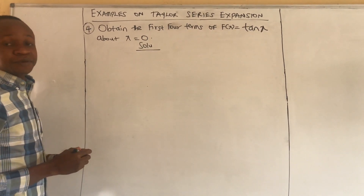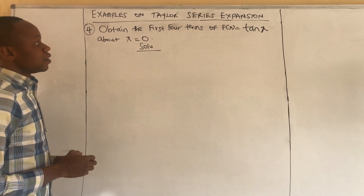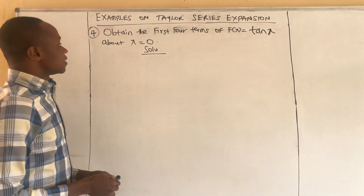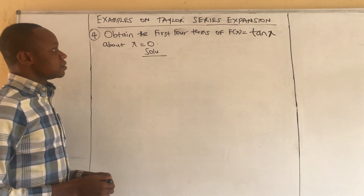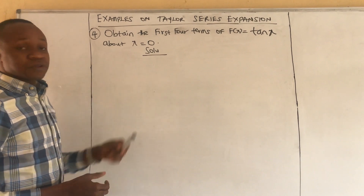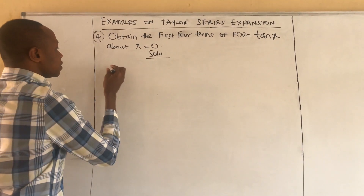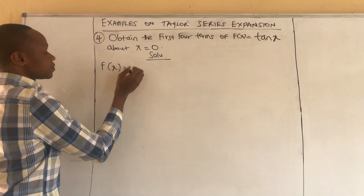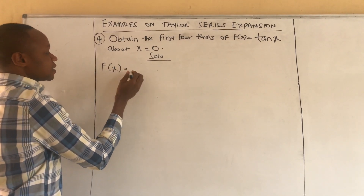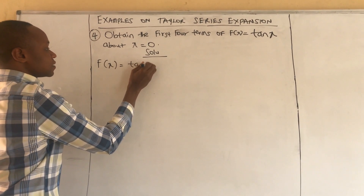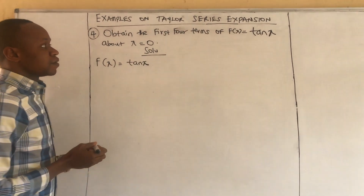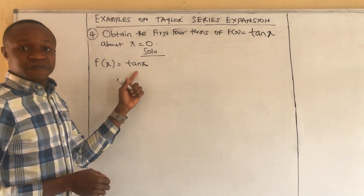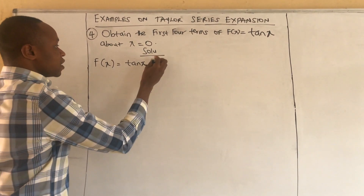Alright, the fourth example: obtain the first four terms of the function tan(x) about x equals zero. The function is f(x) = tan(x). We want to obtain the Taylor series expansion for this function, but I would prefer to rewrite it.